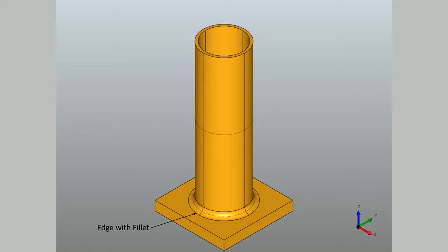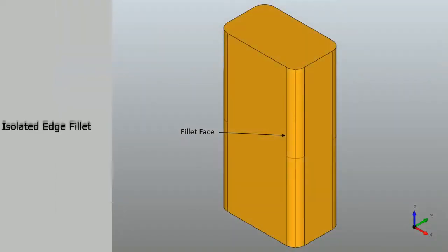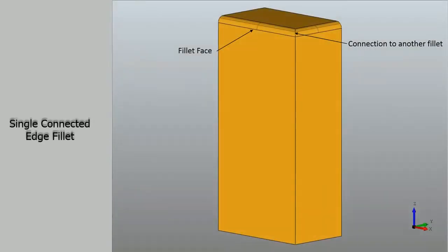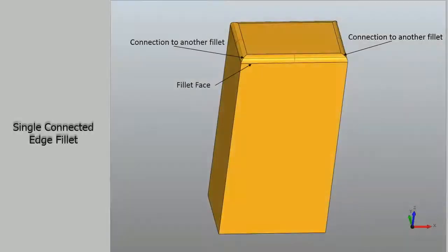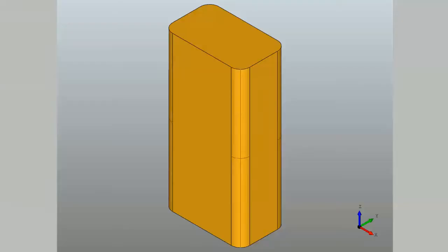The classes currently handled by this utility include isolated edge fillet, single connected edge fillet, and double connected edge fillet. As a demonstration of how de-featuring is done within the utility, we consider the example of a box containing four isolated edge fillets.